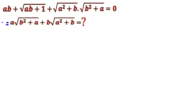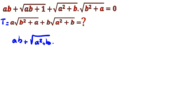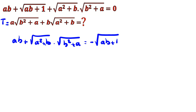I consider this term as t. Then from the first equation, if I take root(ab + 1) to the right-hand side, I have: root(a² + b) · root(b² + a) equals negative root(ab + 1).